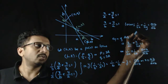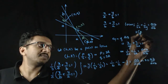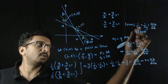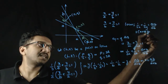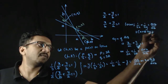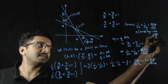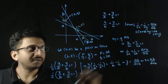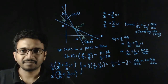Taking LCM, the final locus equation is 2(a+b)·xy = ab·(x + y). Thank you.